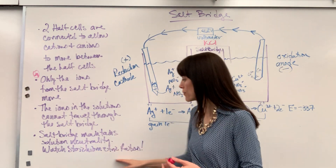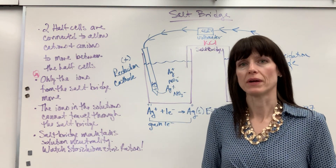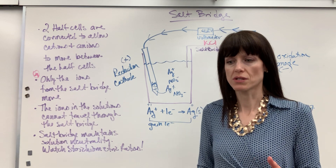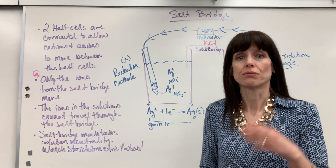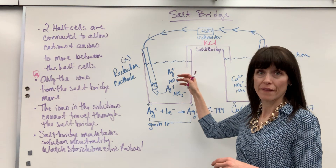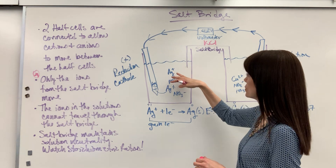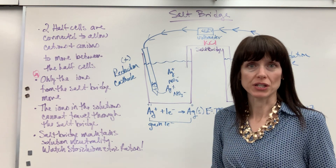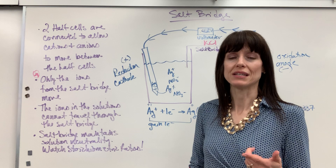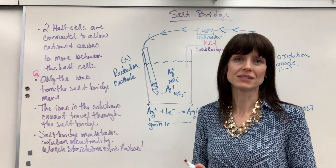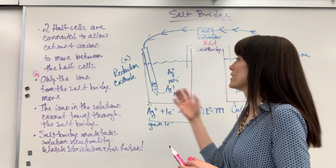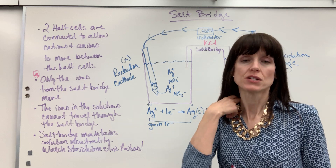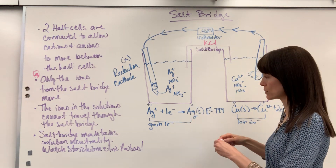Here's what I want you to be careful on — watch the stoichiometric ratio. I've seen questions where students are asked to write the number of ions that are produced coming into the solution from the salt bridge, and you have to have the right ratio. I've also seen questions where students have to point the direction — which ion is going to go into which solution?